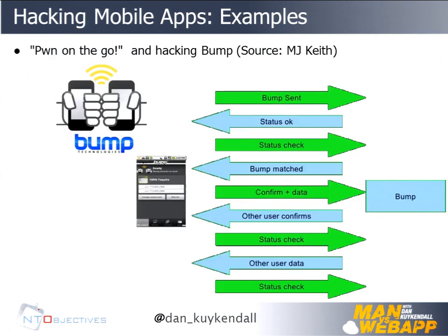This was Pwn2Go — the old app Bump. Remember Bump? You'd bump phones and it would transfer contact information. When you bump, both phones talk to the server and say 'I just bumped, here's my location.' The server matches you up based on time and location, then swaps your information. The weakness was no validation — it would send the V card at the time of the bump. MJ Keith found this — he's over at Denim Group. It was very easy to become another player in that conversation. I set my GPS coordinates to within three miles of the Moscone.